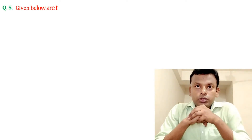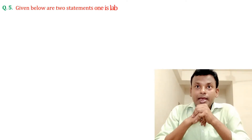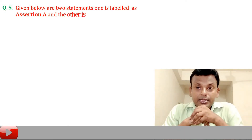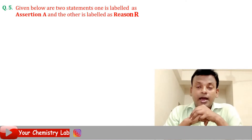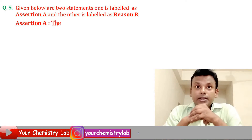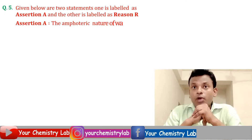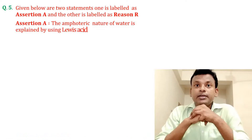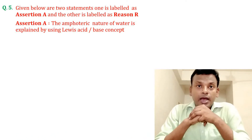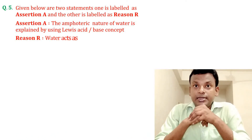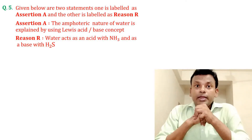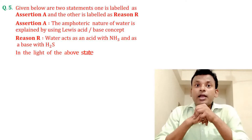Question five: given two statements — Assertion A: the amphoteric nature of water is explained using the Lewis acid-base concept. Reason R: water acts as an acid in NH3 and as a base with H2S. Choose the correct answer from the options given below.